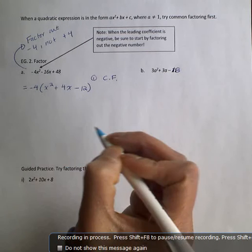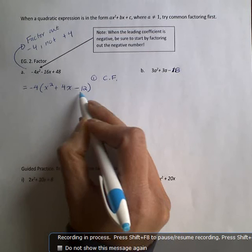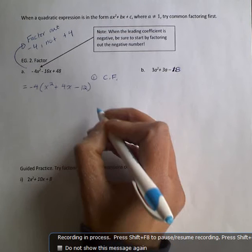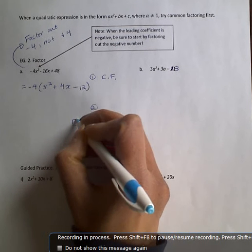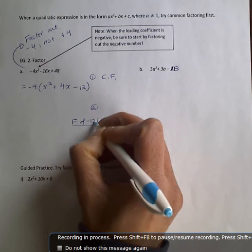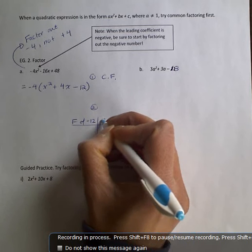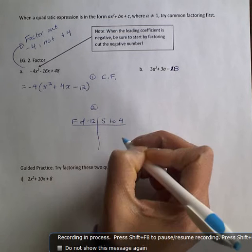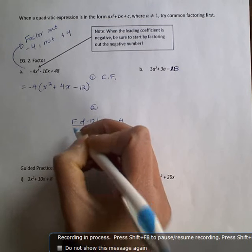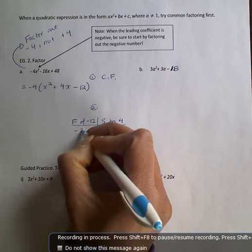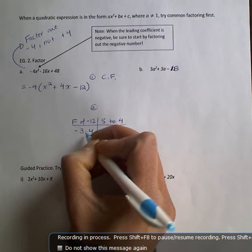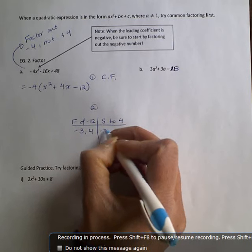Our second step is we're going to factor this trinomial. We're going to factor further. So I'm going to make my factor sum chart. So I'm looking for factors of negative 12 that add up to or sum to 4. So I might try negative 3 and 4, because I'm just brainstorming. Now that doesn't work, because negative 3 plus 4 is positive 1.